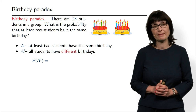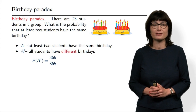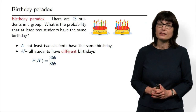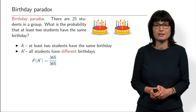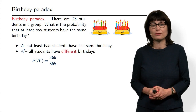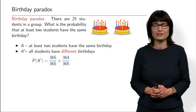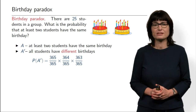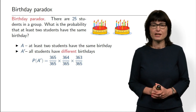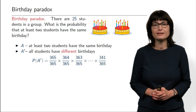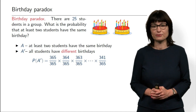What is the probability of the complement? The first student has full choice — any of the 365 days. The second student should have a different birthday, so given the first student is born on some day, the second should choose one of the 364 days. The third student has even less choice — only 363 days. And so on, until student number 25, who has a choice of 341 days out of 365.